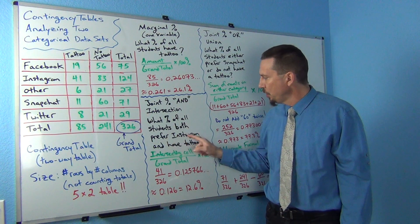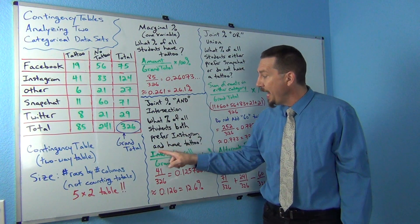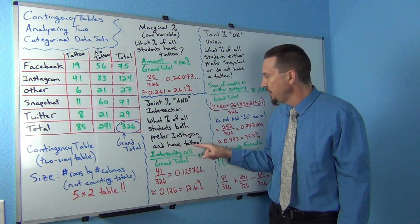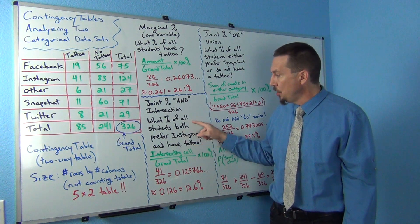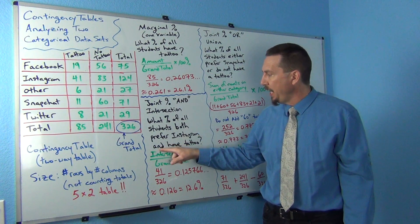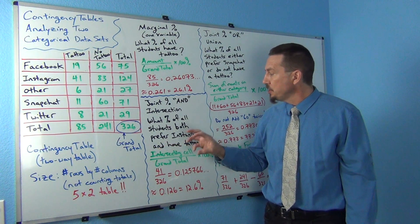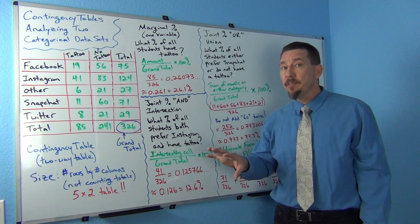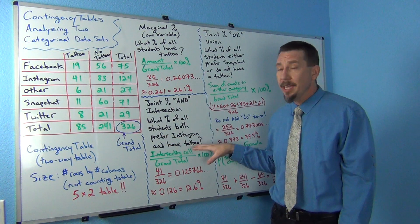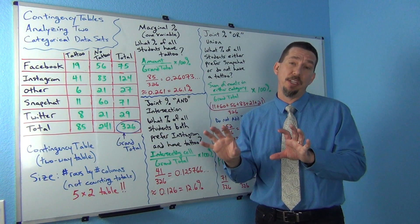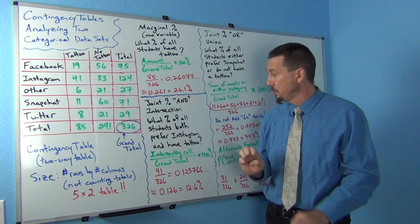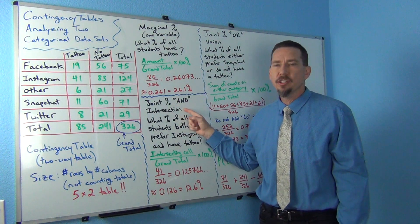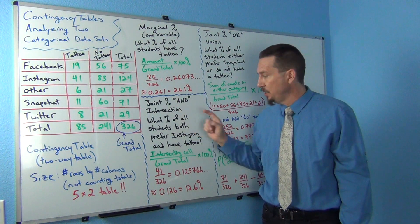Both is a very important word — prefer Instagram and have a tattoo. So notice both and. We're not just looking for anybody that likes Instagram, and we're not looking for just anybody that has a tattoo. Both things have to be true about the person. That's very important in the and, or intersecting percentage.